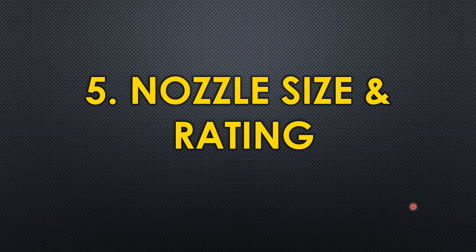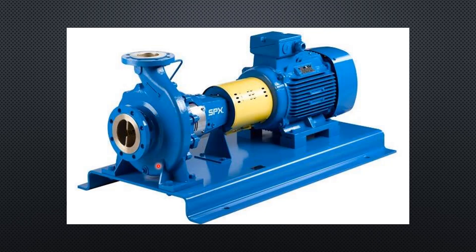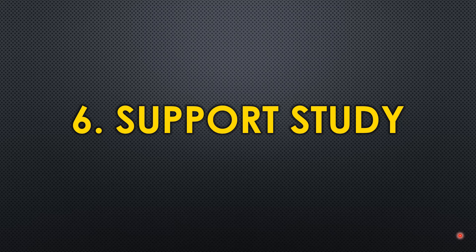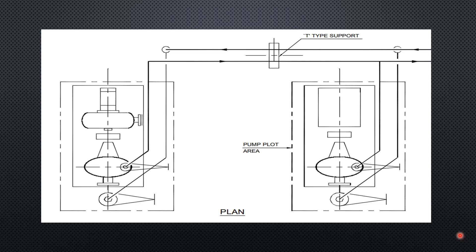The fifth parameter is nozzle size and rating. These are critically important because this is where the piping connects to the pump. For example, your piping spec may call for a 150-rated flange, but the pump delivered could be 300-rated. Before proceeding with pump piping, you must know the flange rating to plan the connection correctly; otherwise you will end up with a major mismatch during construction and face procurement issues.